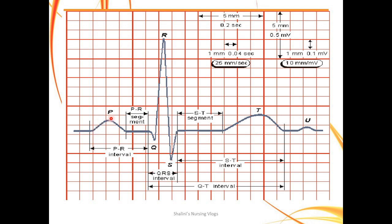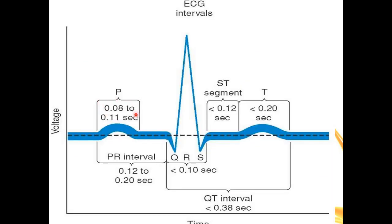On the ECG strip you have the P wave, Q wave, R wave, S wave, ST segment, T wave, and U wave. Each wave has a specific normal time interval. The P wave should be completed within 2–3 boxes: 0.08 to 0.12 seconds. The PR interval is normally 0.12 to 0.20 seconds. The QRS interval should be less than 0.10 seconds. The QT interval should be less than 0.38 seconds. The ST interval should be less than 0.12 seconds, and the T wave less than 0.20 seconds.